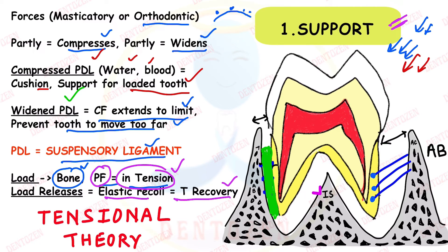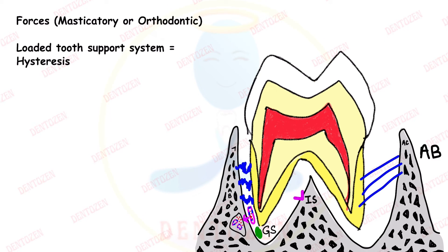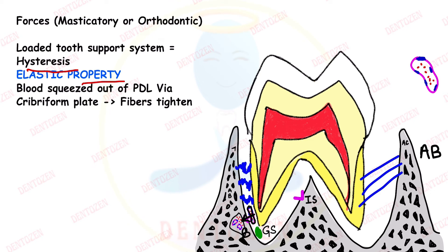Support to the tooth during function is provided because of the tension created in the principal fibers, and this is called the tensional theory. However, this is not an accepted theory, because it is believed that the periodontal ligament is not a suspensory ligament. Another theory says that the PDL can show a property called hysteresis — elastic behavior — especially through the blood vessels in the PDL. When forces are applied, blood from these vessels comes out and goes into the surrounding bone.